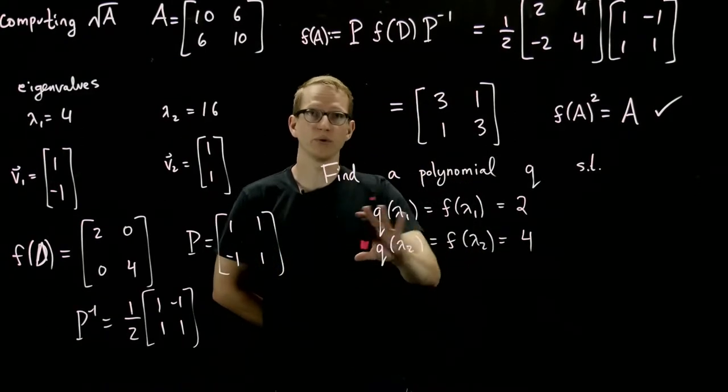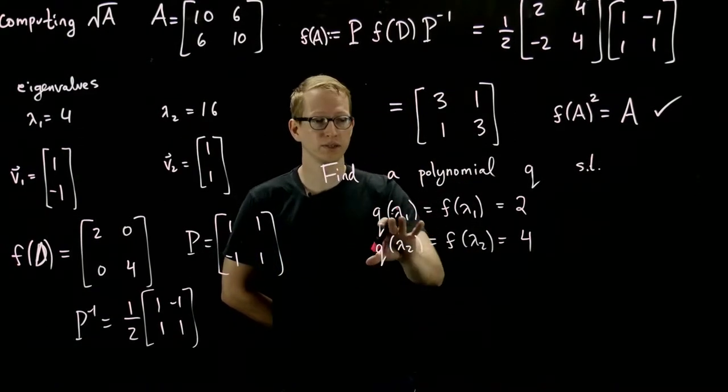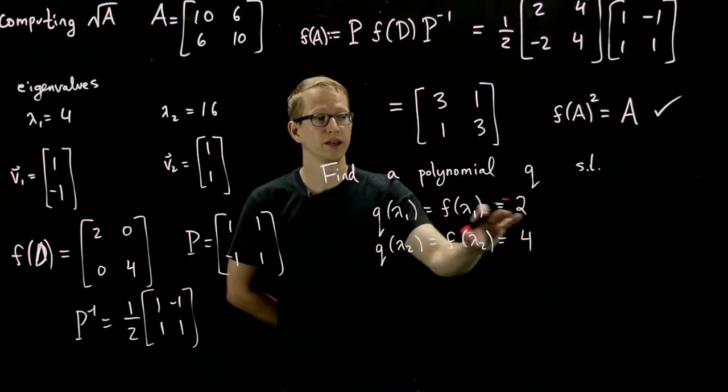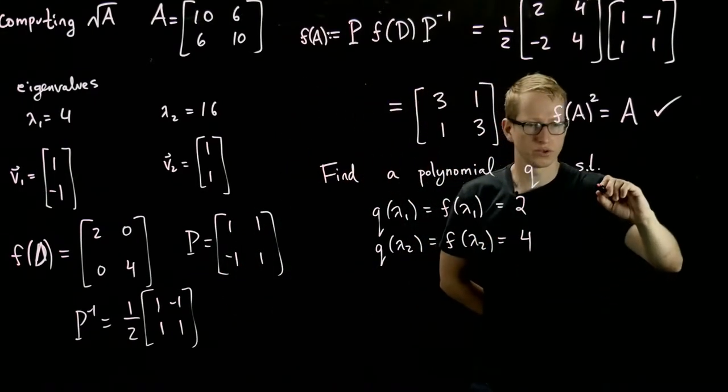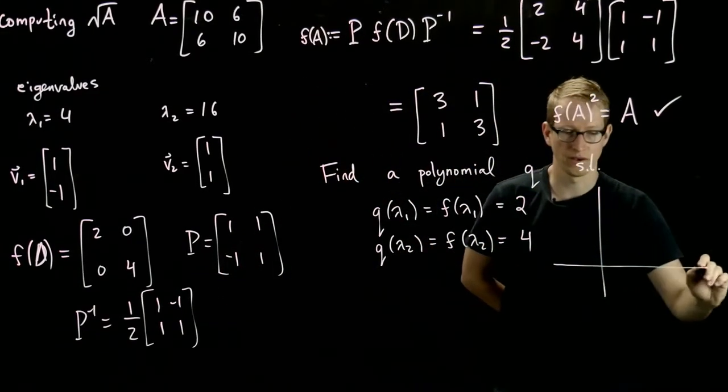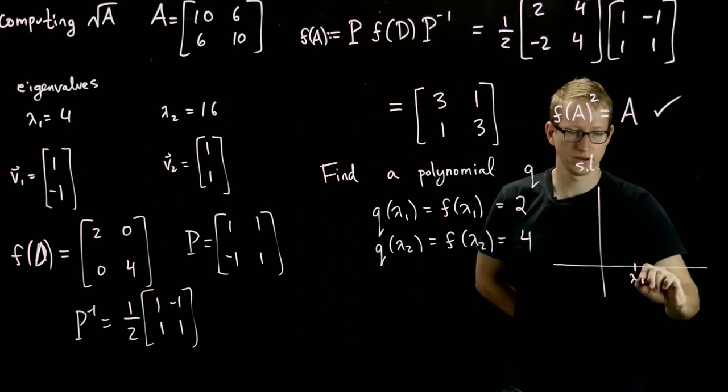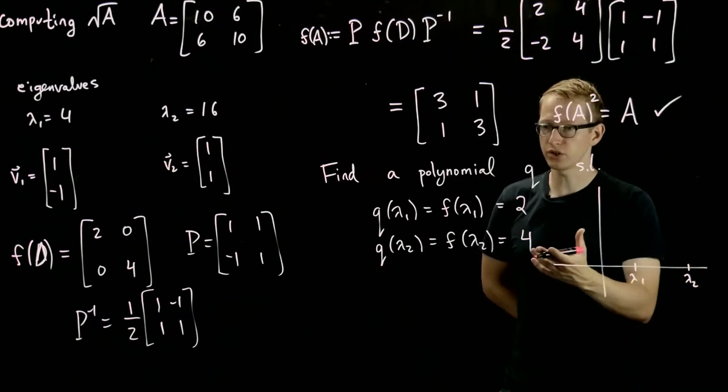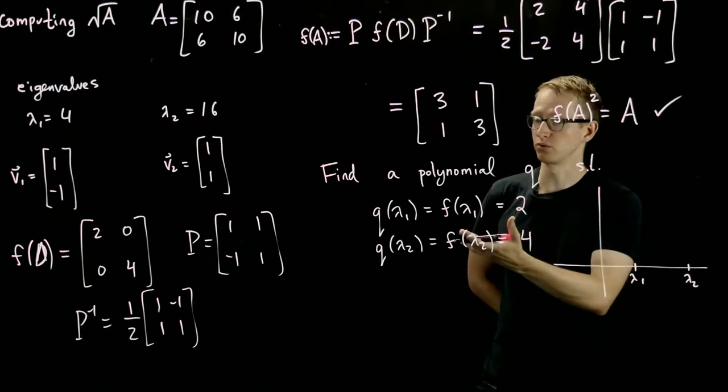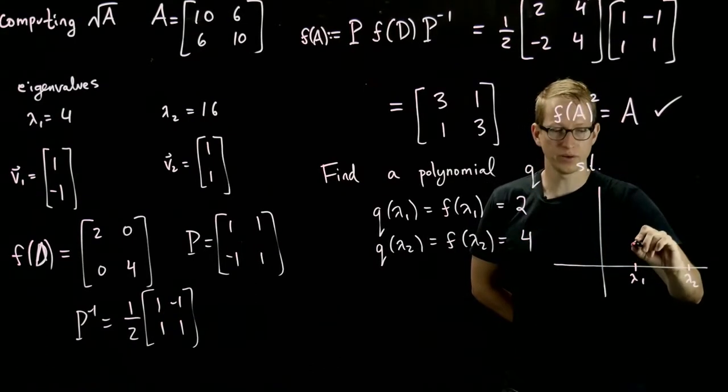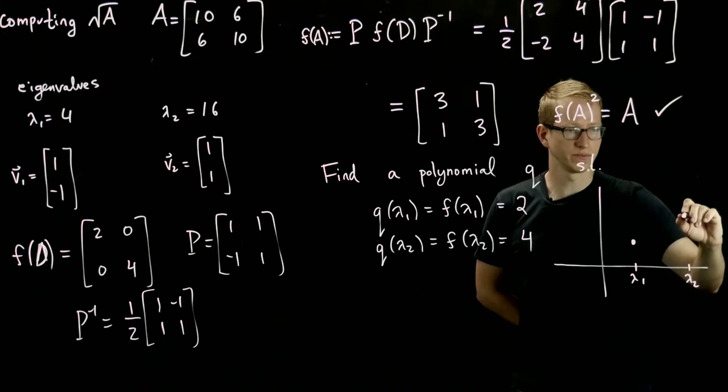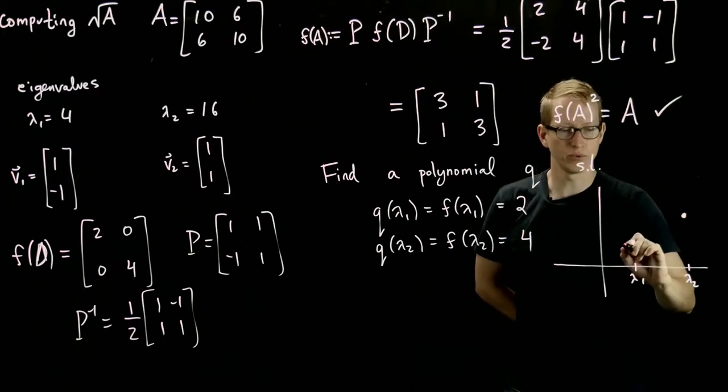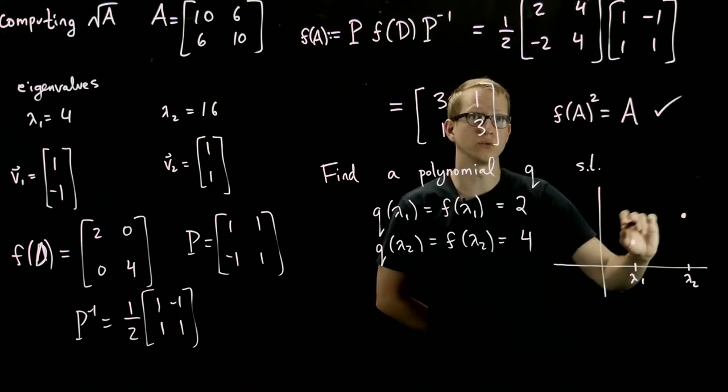So what we're trying to do at this point, now we're doing a different problem, it seems like, because now we're just trying to find a polynomial that interpolates these two values of a function. So what we're trying to do is, so here's lambda 1, here's lambda 2, and we have a function, which is just the square root, and we know that f applied to lambda 1 is 2, and f of lambda 2 is 4. Now this is not drawn to scale in any way, but what we're trying to do is find a polynomial that goes through these two points.